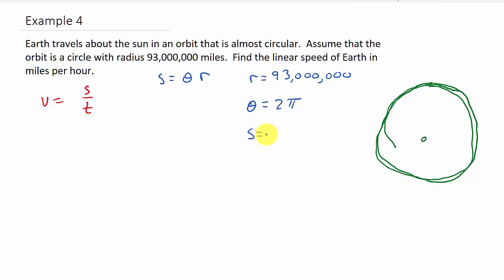So that's going to tell me that S is R times theta, which is 93 million times 2π. So let's see. We get S is 186 million. Alright. So there's S. Alright. So here we've got V is S. Nope. I'm sorry. Look what I did. I left off the pi.